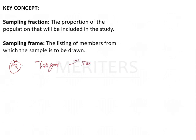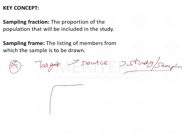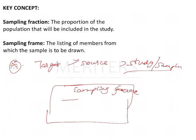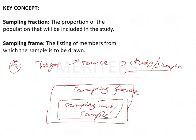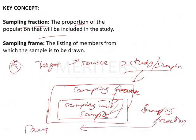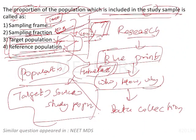To summarize: target population → source population → study population (or sampling population) → sampling frame → sampling units → samples. Samples are a subset of the sampling frame. Sampling fraction is the proportion of the population selected. The technique used to select them is called sampling technique — either probability or non-probability sampling. Sampling fraction is the answer to this question.